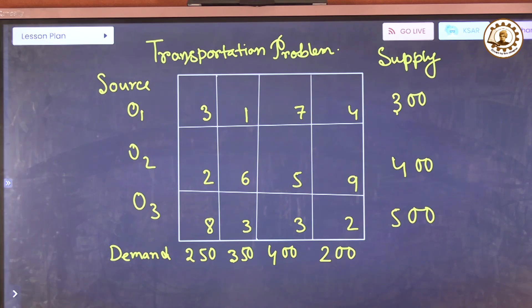Basically, there are two distinct categories of transportation problems. First is balanced transportation problem where supply equals demand, and unbalanced transportation problem where supply is not equal to demand. Within these two broad kinds of transportation problems, there are three methods to tackle them.